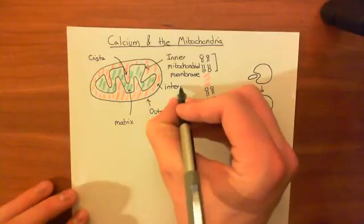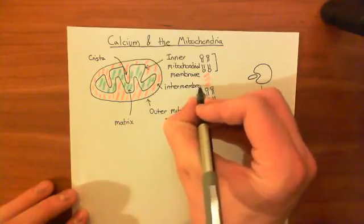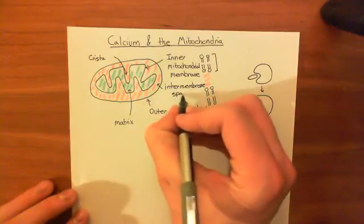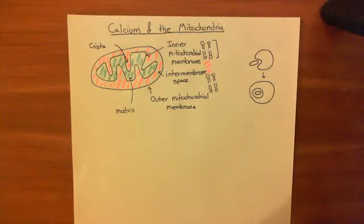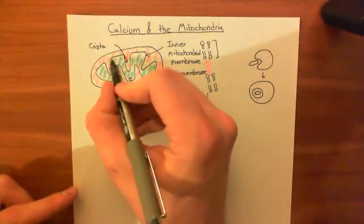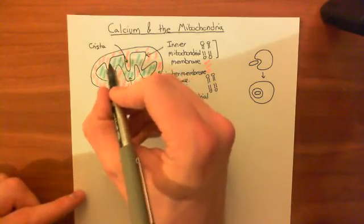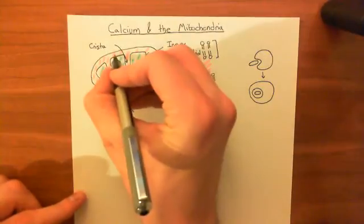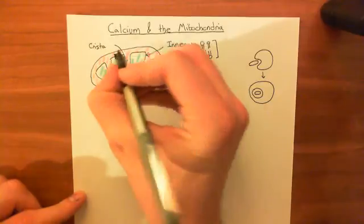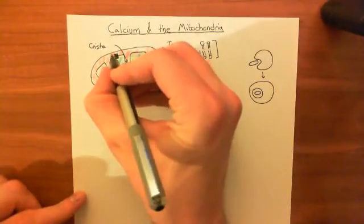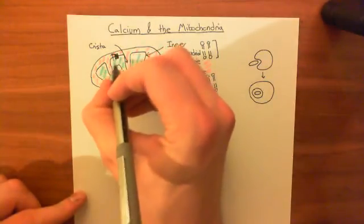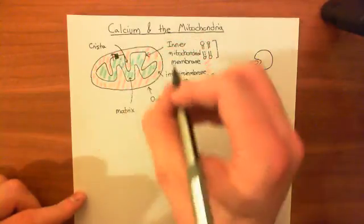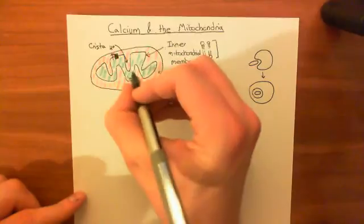Now we need to do a brief reminder of the physiology of the mitochondria. Something very important happens across the inner mitochondrial membrane: the respiratory chain — the electron transport chain — occurs there. The proteins of the electron transport chain, complex 1 through complex 4, are in this inner mitochondrial membrane. Basically what they do is pump protons, using the energy from high-energy electrons to pump protons from the matrix into the intermembrane space.